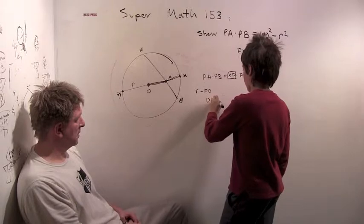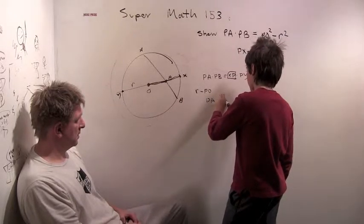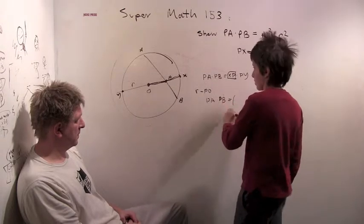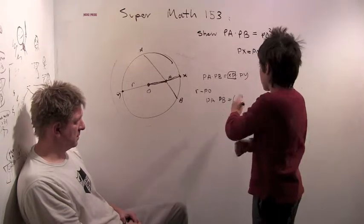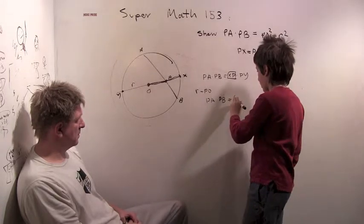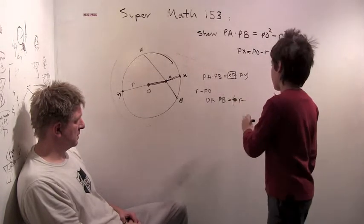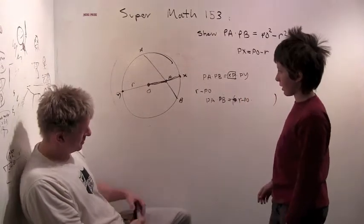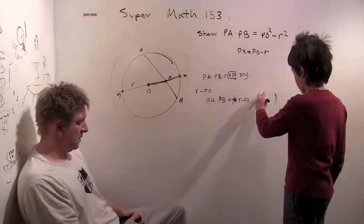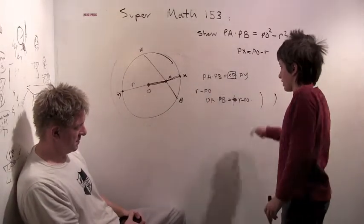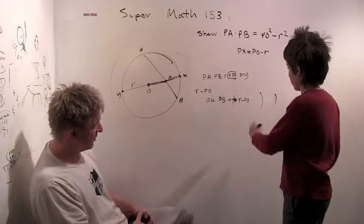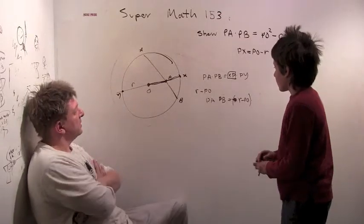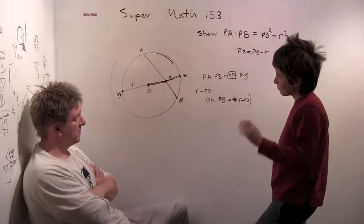So, PA times PB equals R minus PO times, let's, PY. Close your parentheses. Sorry. But we need to put PY in there. Right. But you have R minus PO. There you go. Alright. It puts PY. PY.